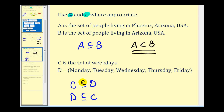This might remind you of inequality symbols. When working with inequality symbols, if we have the less-than symbol, it's just less than. If we have the less-than-or-equal-to symbol, it's less than or equal to. So the bar represents that the two sets could be equal to each other, whereas proper subsets cannot be equal to each other.